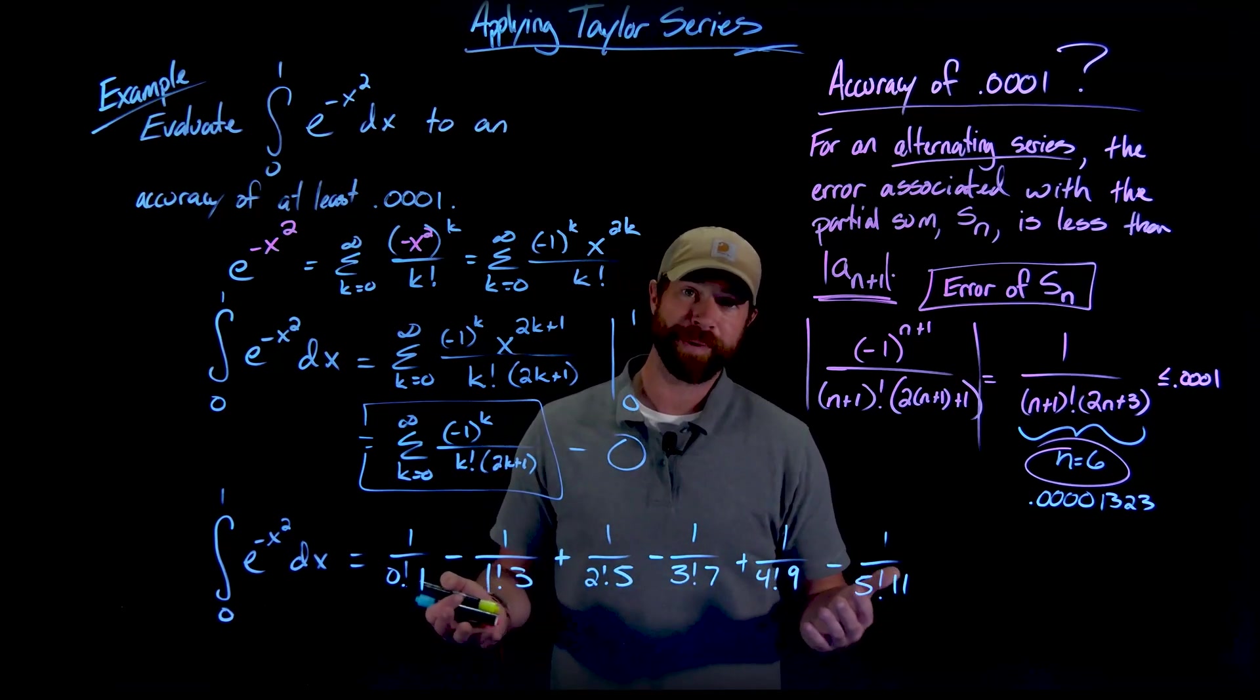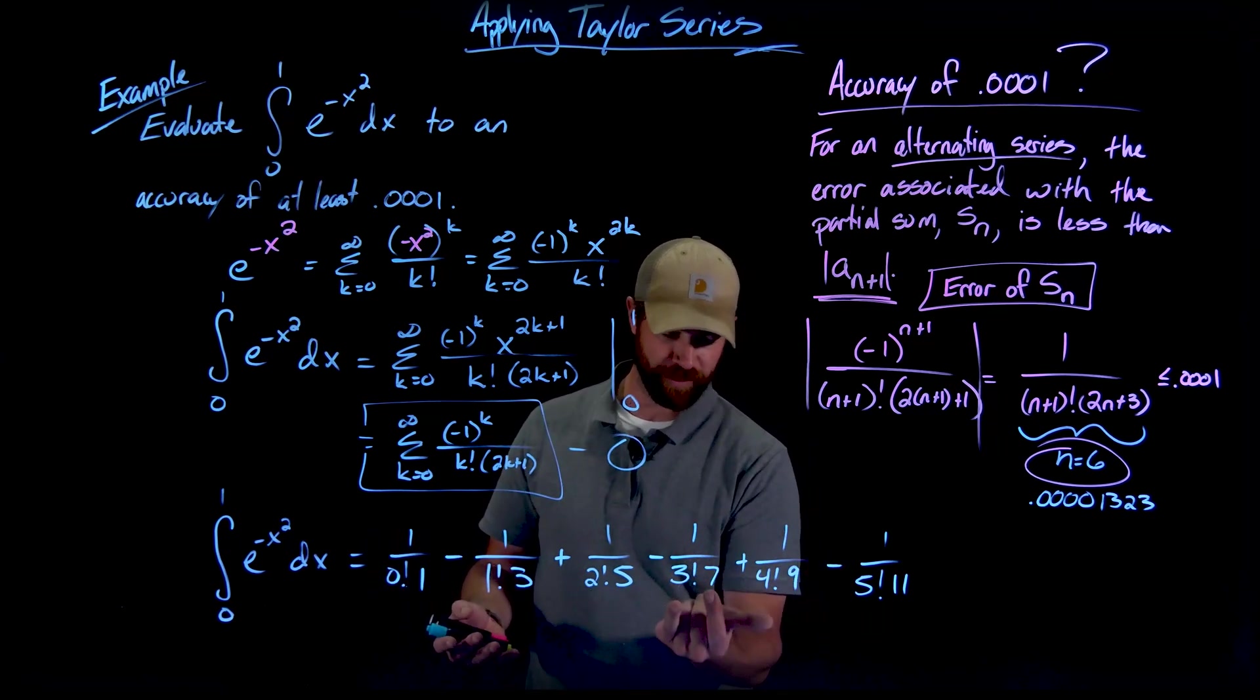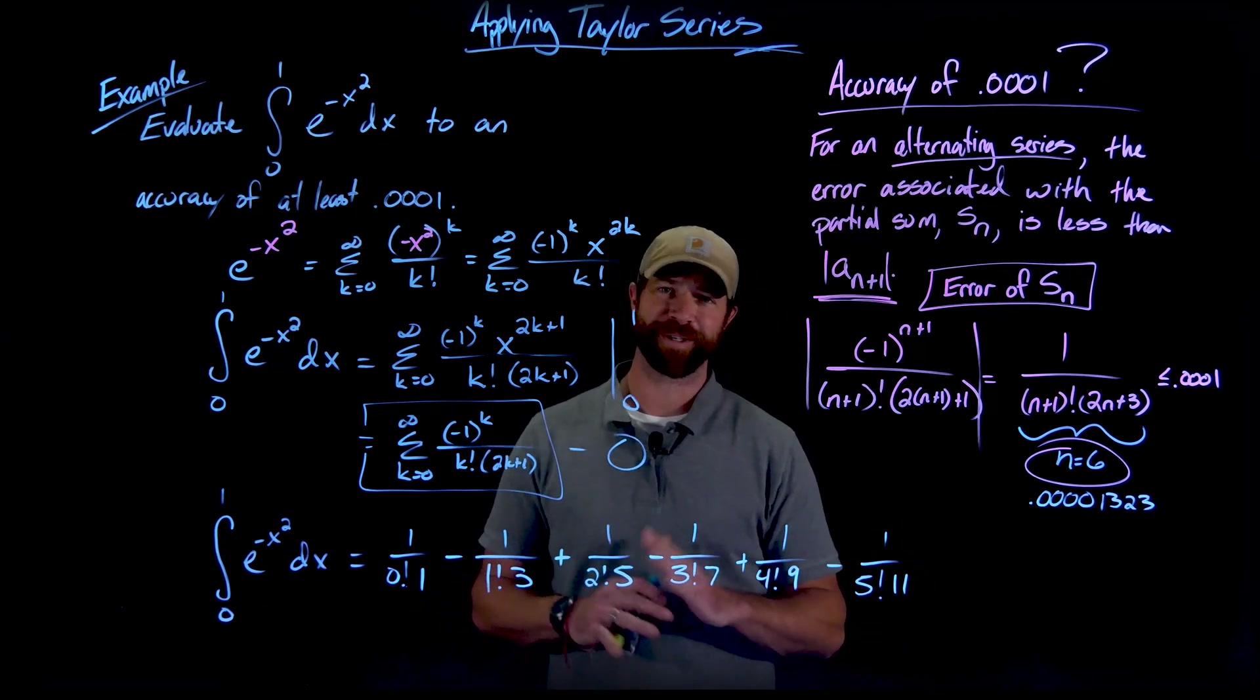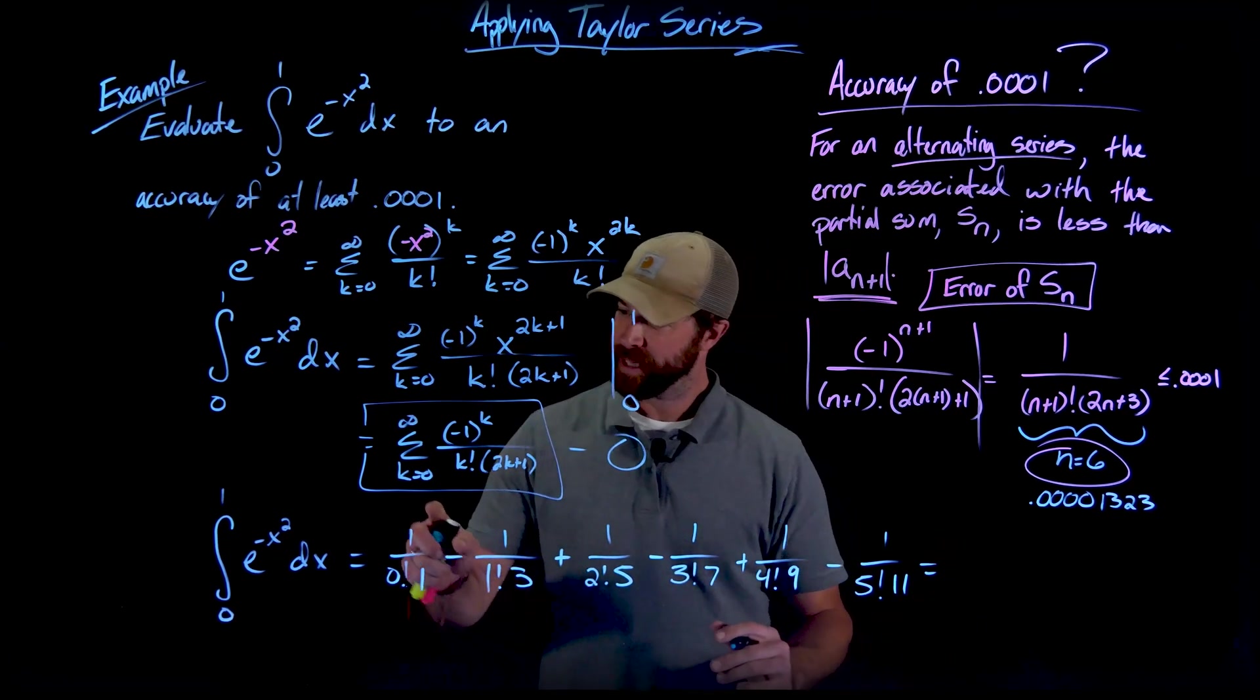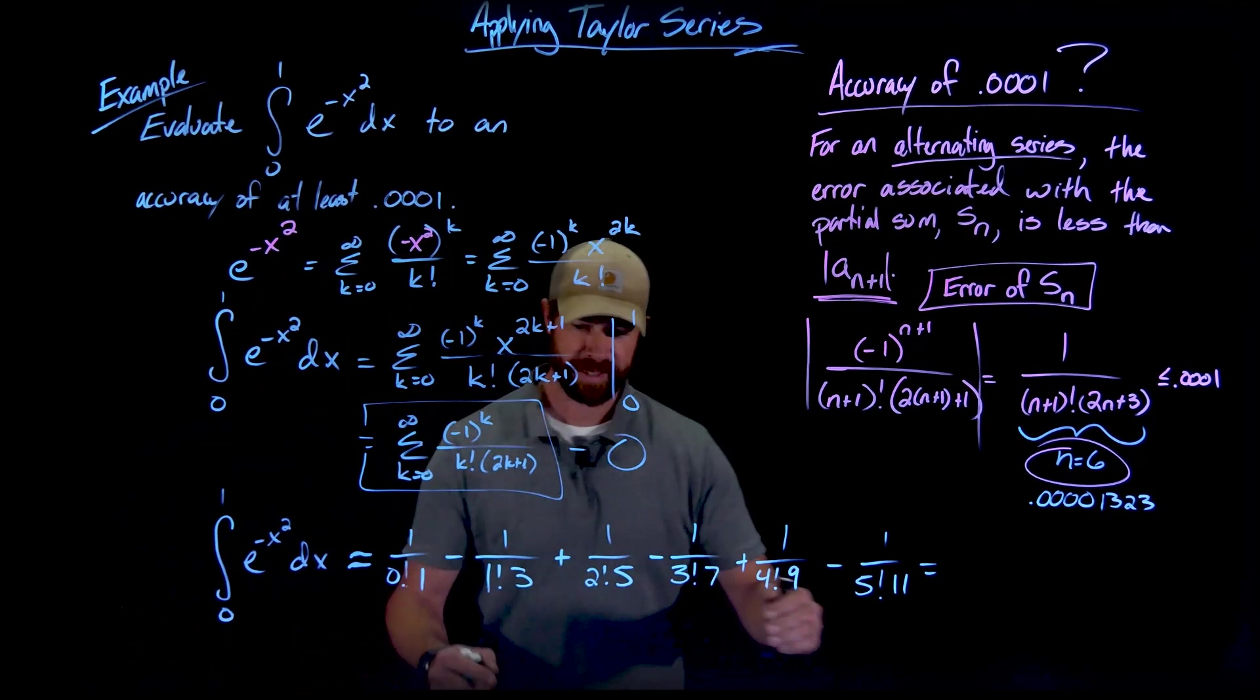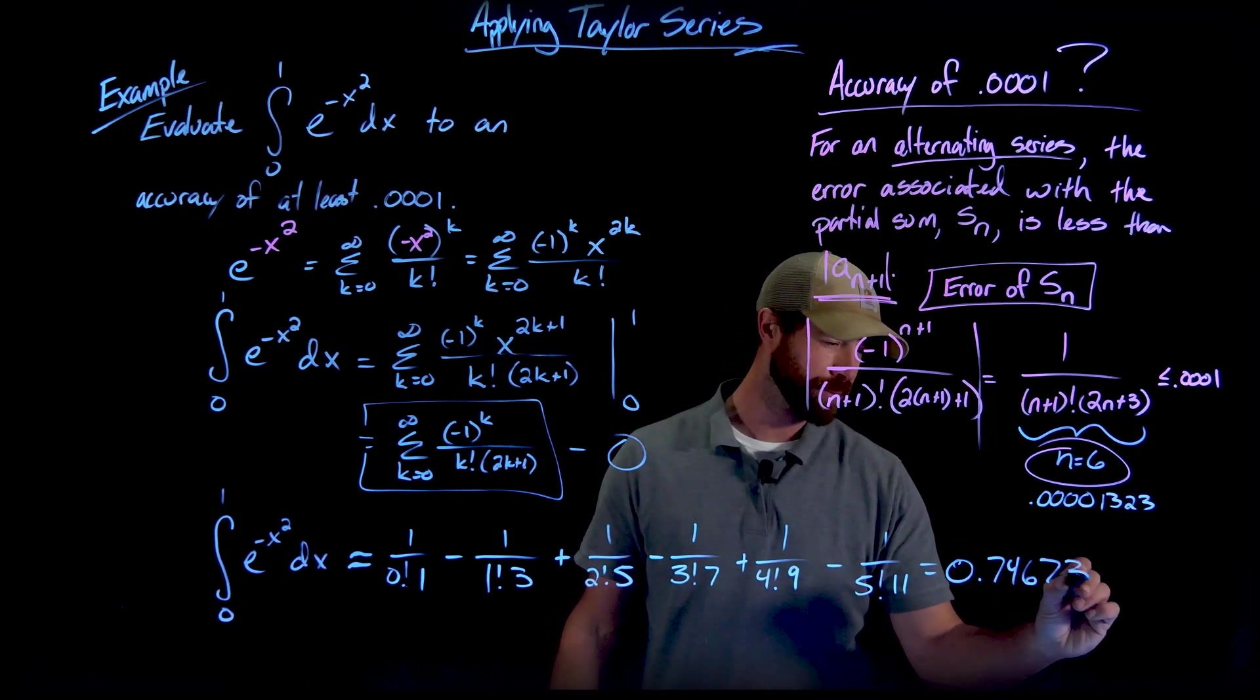But I've written these all out, and I'm not going to evaluate these by hand. I mean, I could, which is pretty amazing at this point, because most of these aren't too hard. That factorial is just six. That'd be one over 42. But this becomes 120 times 11. I'm not going to do all that. But I did calculate it in my calculator. And what I got is that this value, actually, I should say is approximated by that. But this summation right here is equal to 0.74673.